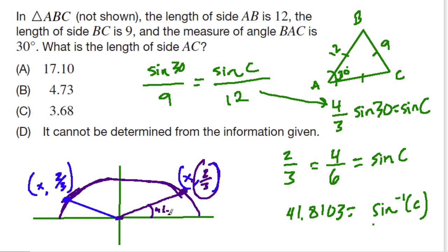180 minus 41.8103, we can also think of this angle as 138.19 degrees, which makes sense because that is about 41 degrees on this side, 41 degrees away from this x-axis here.